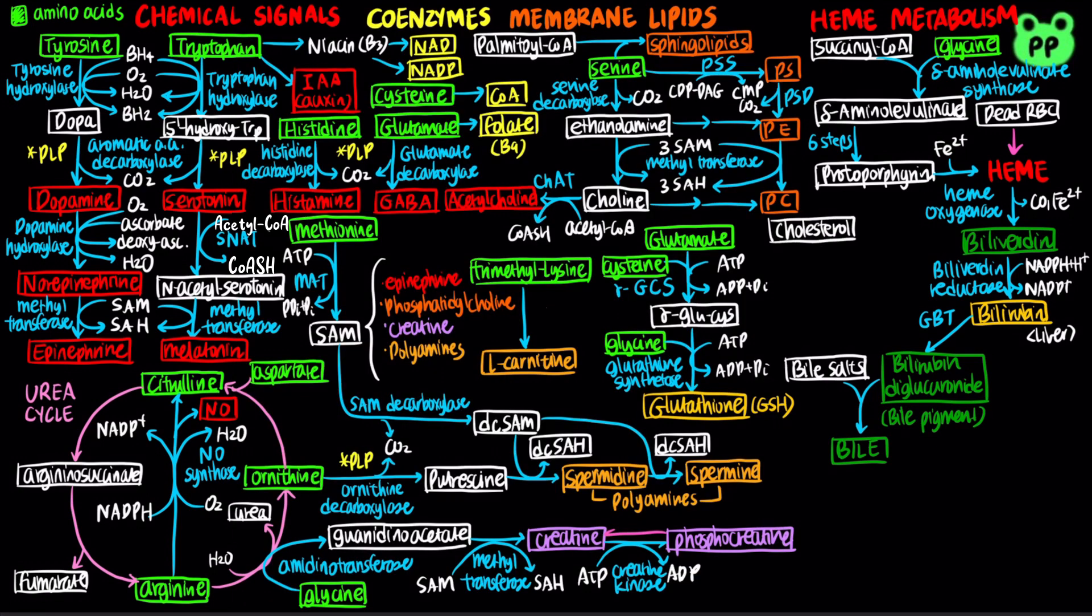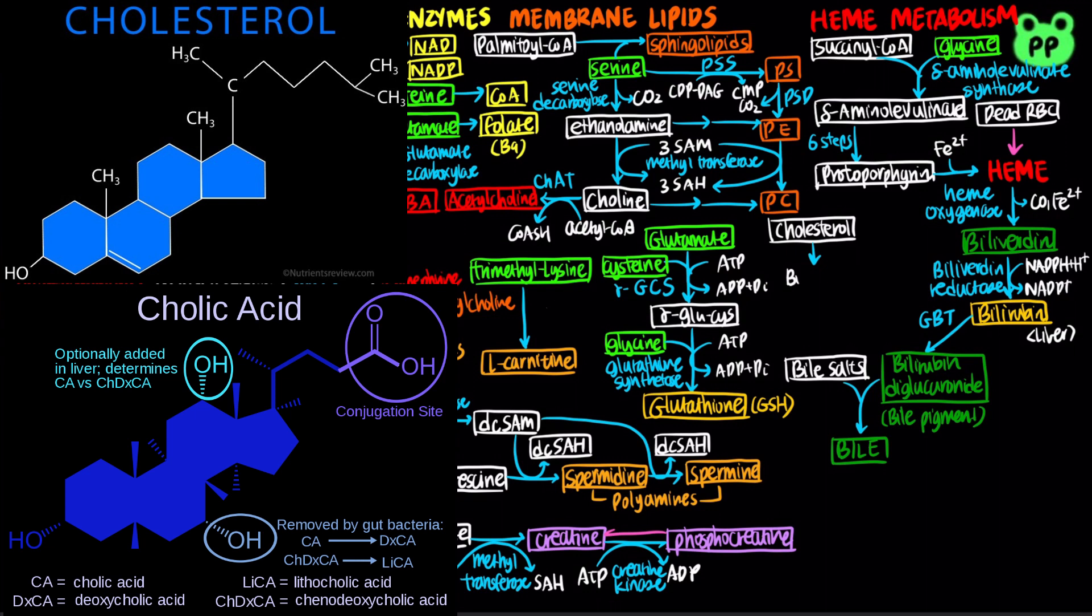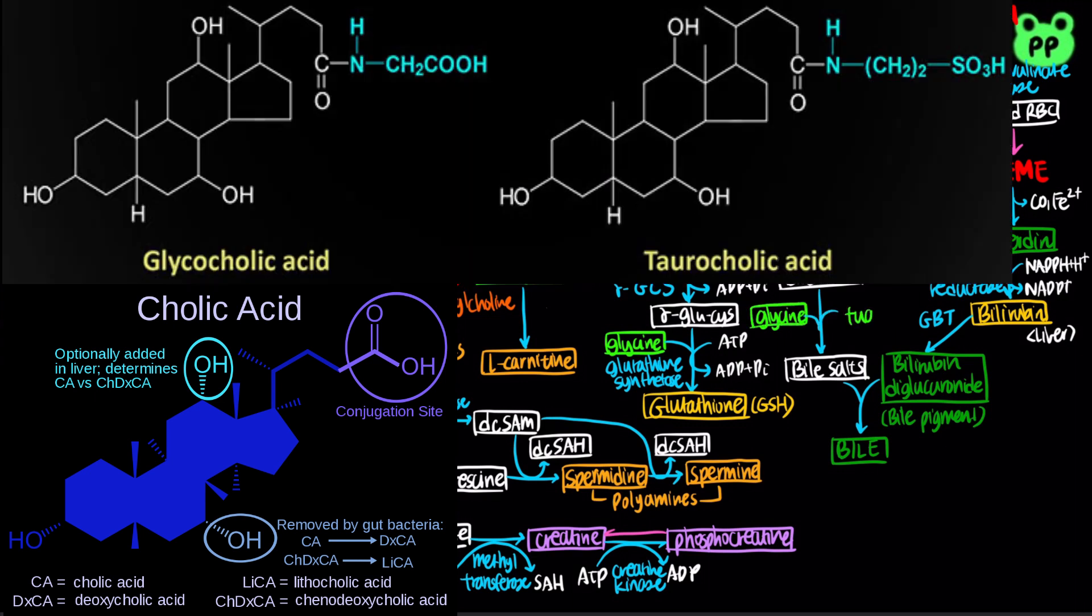Primary bile acids are synthesized from cholesterol in the liver. In the intestines, primary bile acids are conjugated with taurine or glycine residues to form secondary bile acids, which are the major bile salts. Taurine is synthesized from cysteine in a few steps.